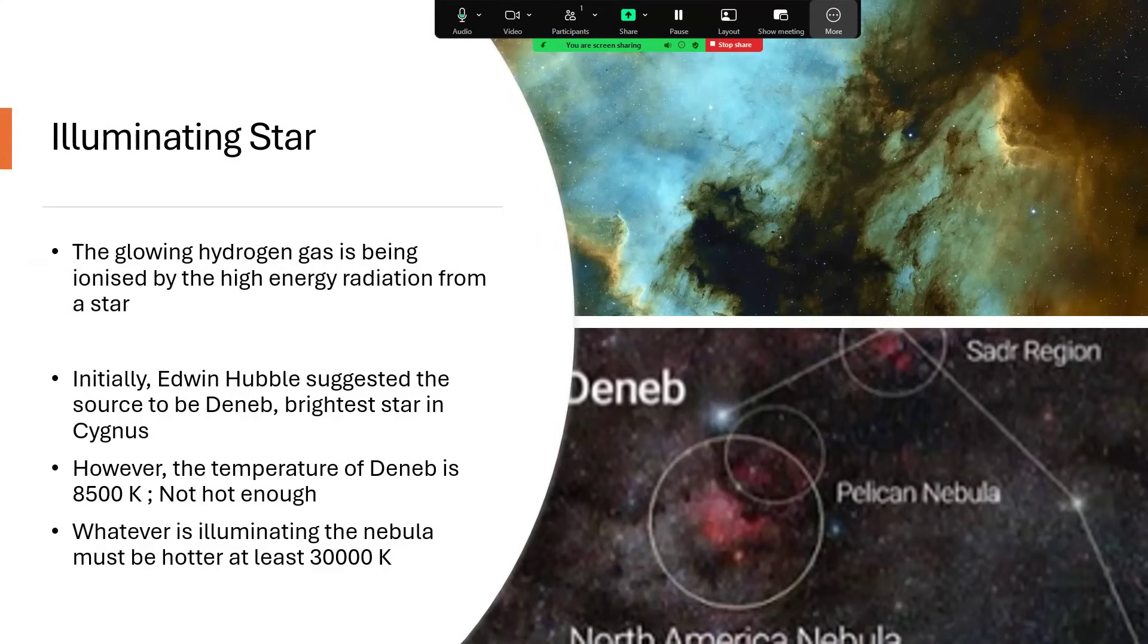There was a little bit of a mystery to this one, which was what is the star that is illuminating it all? Why is all this gas glowing? It's because of ultraviolet high energy radiation from a very hot star. Edwin Hubble suggested that the bright star Deneb nearby, which looks very bright to us and indeed is quite a powerful star, is around about 1600 light years away. That's too near, it's a thousand light years from the nebula so doesn't really work.